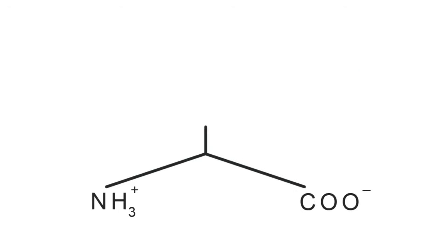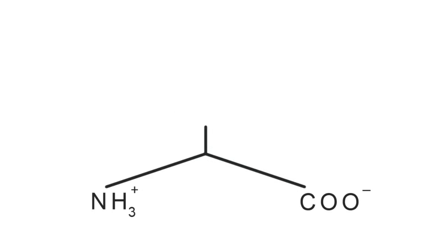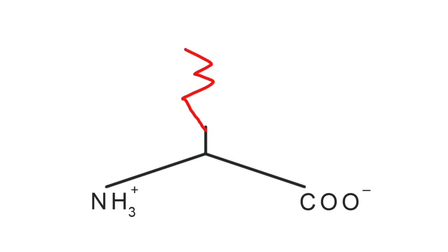Methionine is a little trickier. Its single-letter abbreviation is M. To draw methionine, we start with our backbone and draw an M. You can see that there's an S shape embedded — so you connect your M to the backbone, and you've got your sulfur, a carbon connecting to the sulfur, another carbon connecting to the sulfur, and then the connection to the backbone. That is methionine.